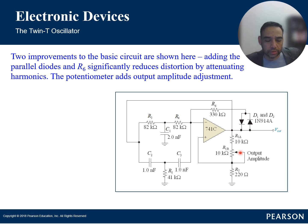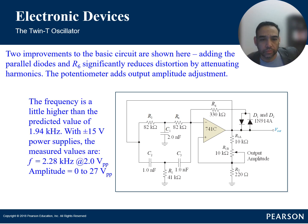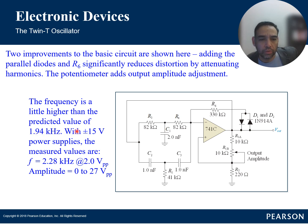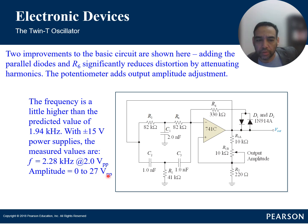The measured frequency is a little higher than the predicted value of 1.94 kHz with a plus or minus 15-volt power supply applied to the 741 op-amp. The measured values are f = 2.28 kHz at 2 volts peak-to-peak, with an amplitude of 0 to 27 volts peak-to-peak — that's the output.